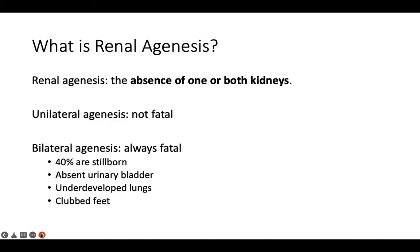Babies with bilateral renal agenesis will typically have underdeveloped lungs, absent urinary bladder, anal atresia, esophageal atresia, and unusual genitals.